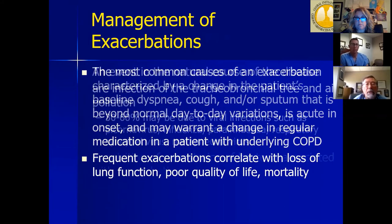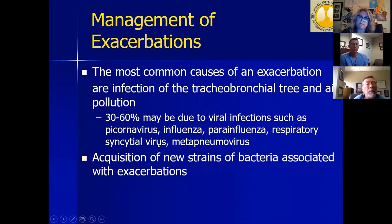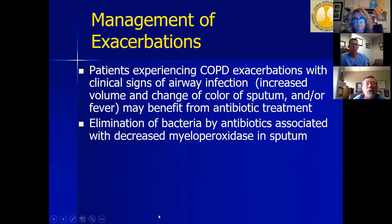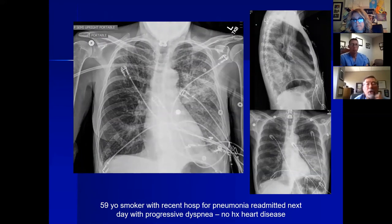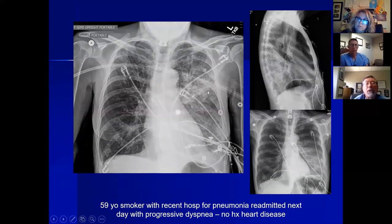Exacerbations are often triggered by viral or bacterial infection — 30–60% are viral. Bacterial infections often involve a new strain. We assess sputum color: clear or white usually doesn't warrant antibiotics, but discolored sputum does. It's important not to assume every exacerbation is just COPD — one example was a patient admitted for pneumonia and readmitted the next day with progressive shortness of breath and significant shadowing in the left lung, requiring workup beyond a simple COPD exacerbation.